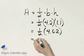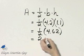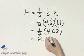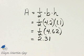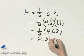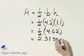But I know four divided by two is two, six divided by two is three, and two divided by two is one. So my area is two and thirty-one hundredths, and what are my units? This is area, so this would be square miles.